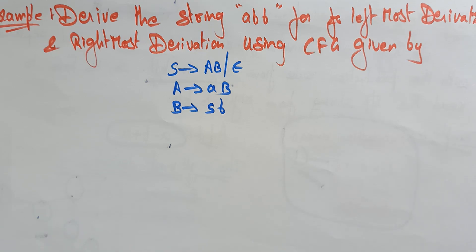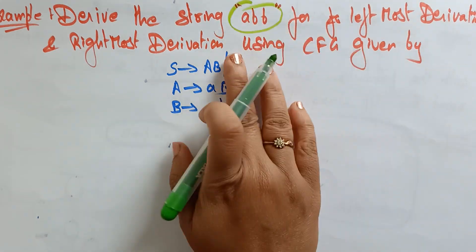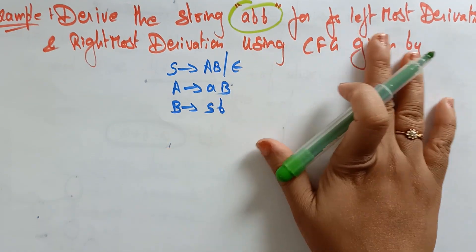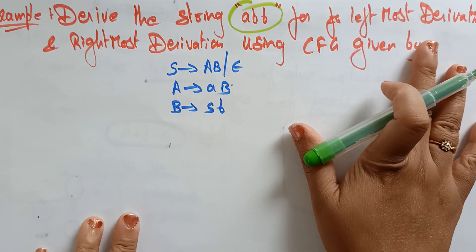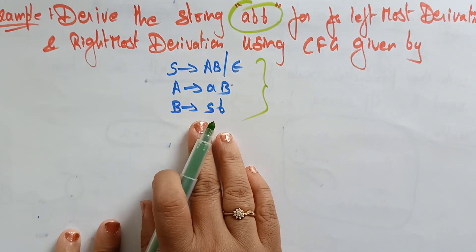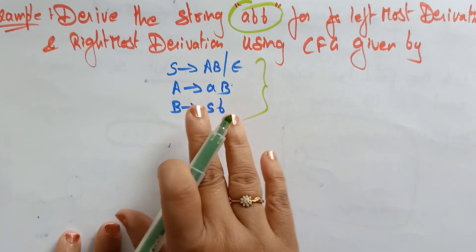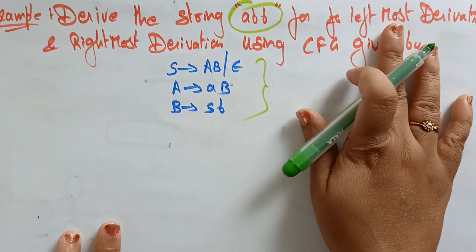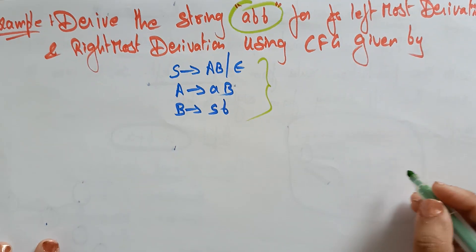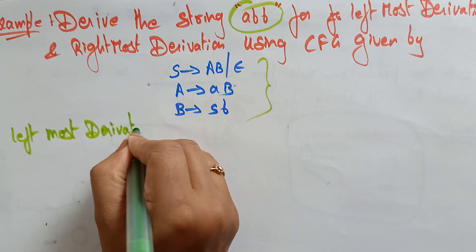Welcome back students. Let's take examples on derivation — leftmost derivation and rightmost derivation. The question is to derive the string 'abb' using both leftmost and rightmost derivation from the given context-free grammar. First, let me take the leftmost derivation.